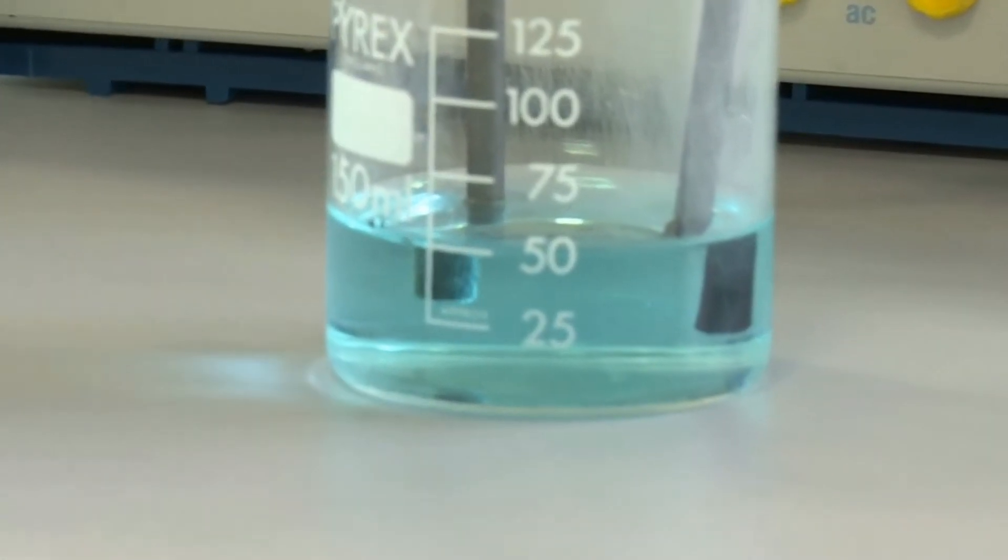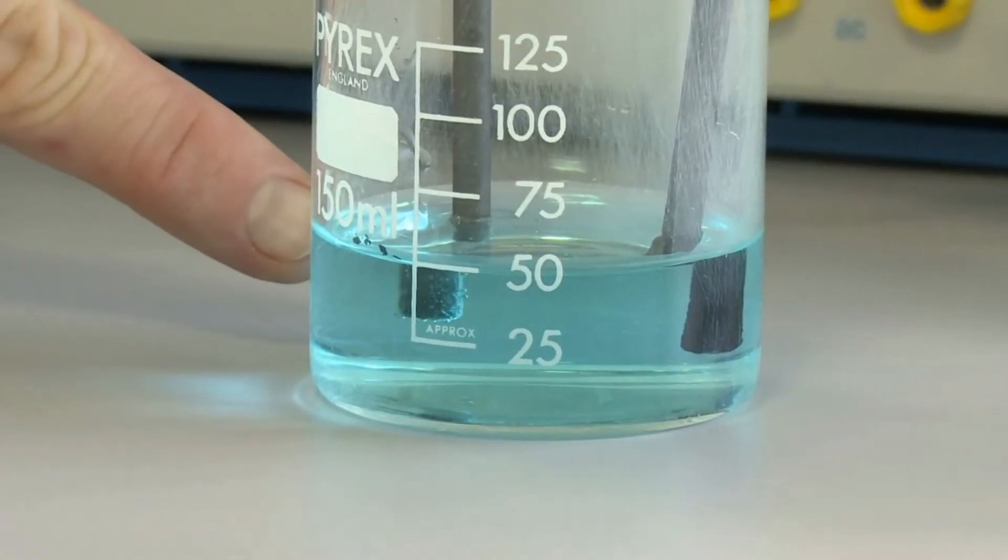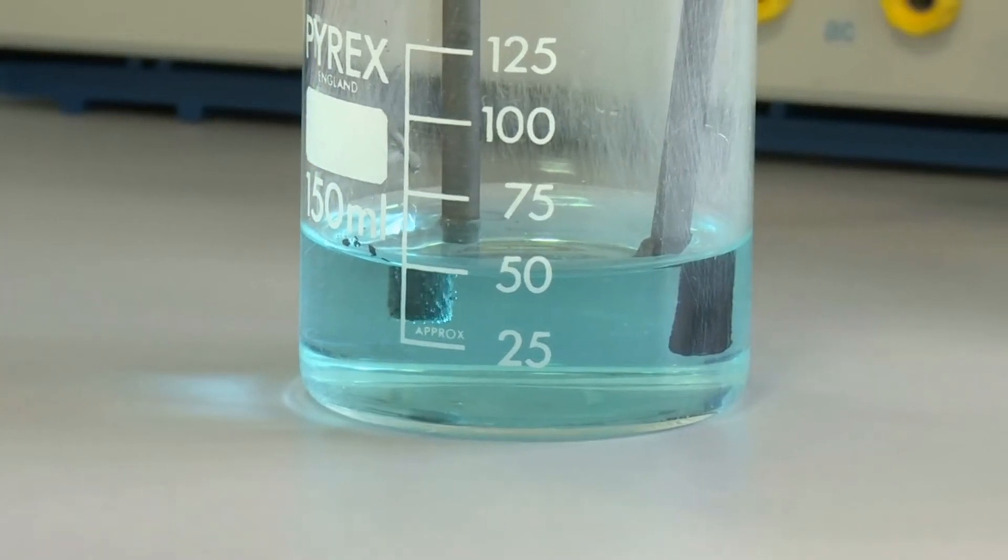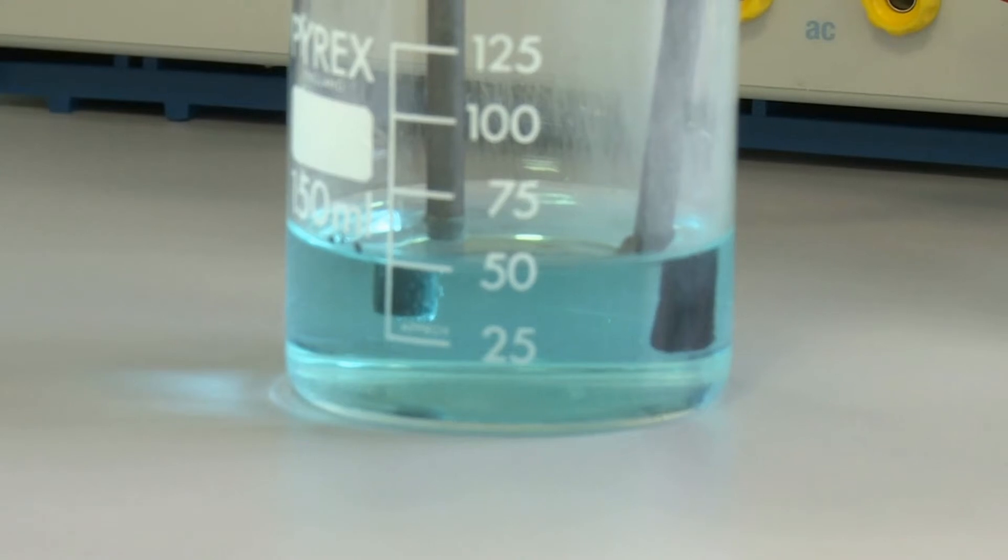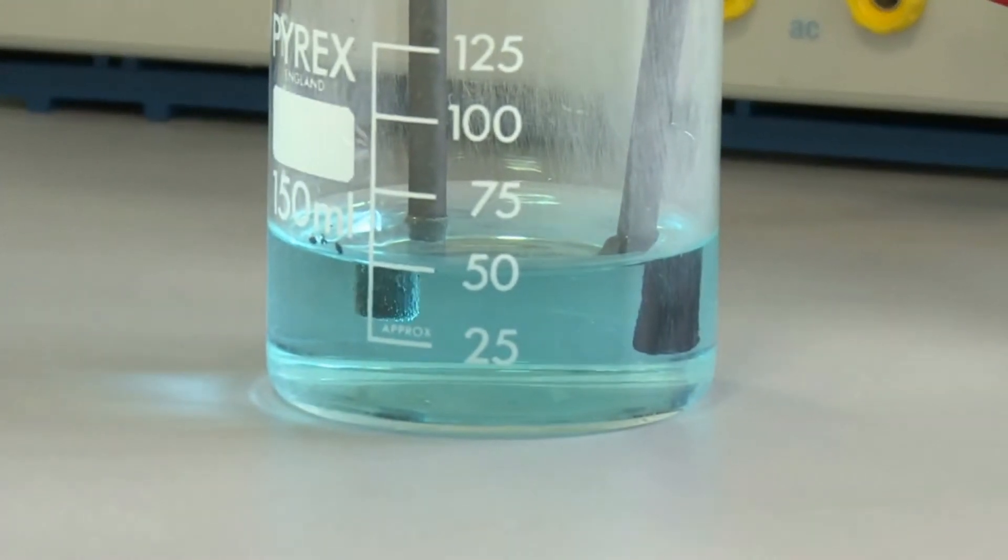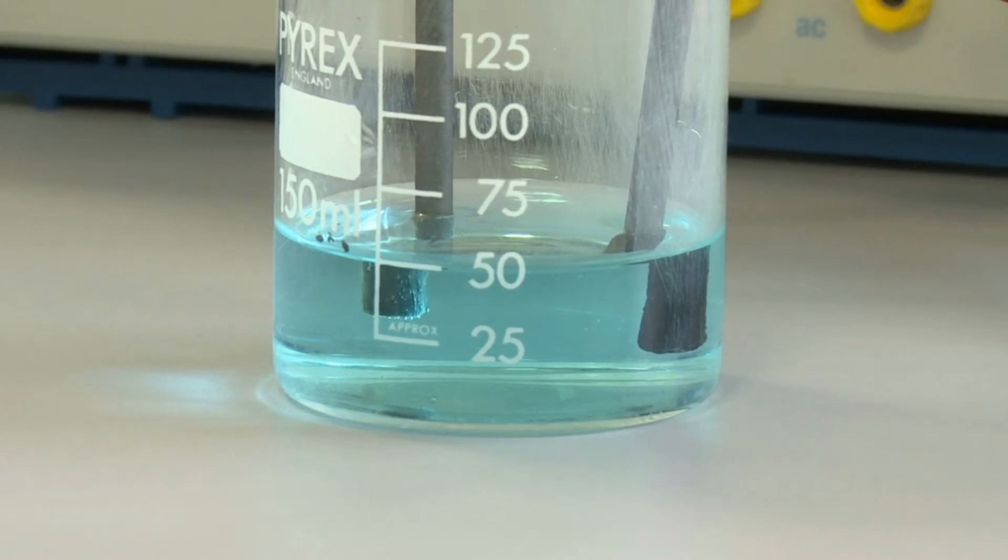You can see straight away at the positive electrode we have a gas formed. You can see the bubbles of gas forming there at the positive electrode, and at the negative electrode you can see that a solid is starting to form on that electrode.